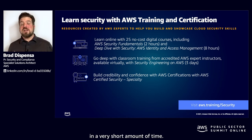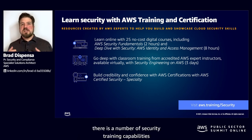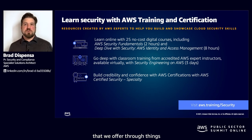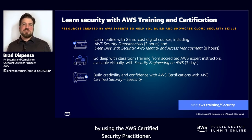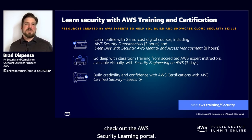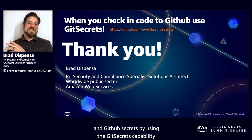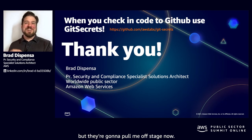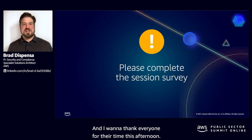With that, we've covered a lot in a very short amount of time. For customers that want to learn more about security with AWS, there are a number of security training capabilities through things like online learning, certifications, and the AWS Certified Security Practitioner. Check out the AWS Security Learning Portal. And one more thing: check for GitHub secrets using the Git Secrets capability. I hope everyone enjoyed this — there's a set of good checks for you to run. Please make sure you fill out your session survey, and thank you for your time this afternoon.